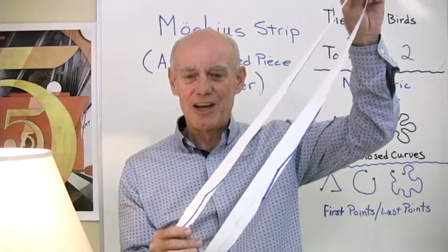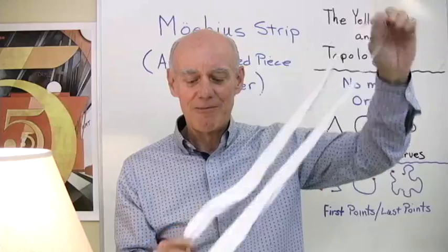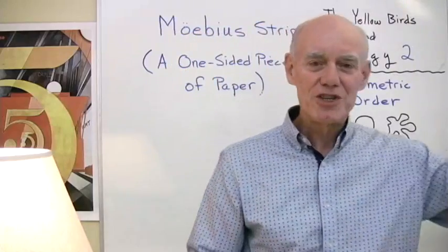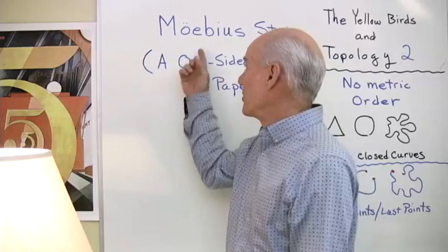I've cut next to that one edge, so I haven't cut this thing in half. So there's a look at a one-sided piece of paper. We call it a Mobius strip.